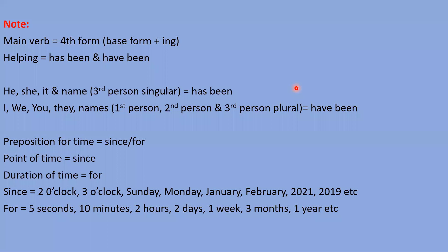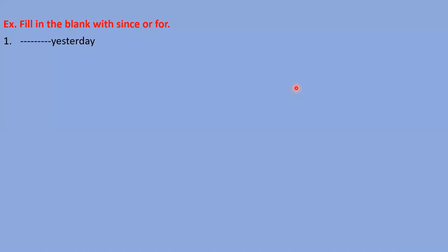Fill in the blanks with 'since' or 'for.' Just you have to fill 'since' and 'for.' Again, understand the point so that you will not get any confusion: for point of time we should use 'since,' and for duration of time we should use 'for.' Now please raise your hand for the first question. Which word will come for 'yesterday' — since or for? Jia, you please tell me.